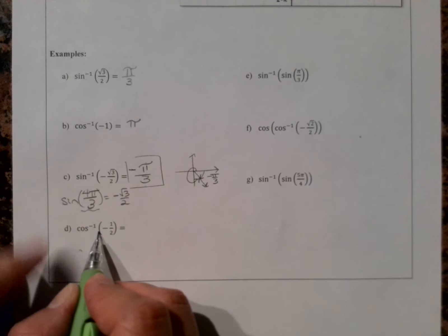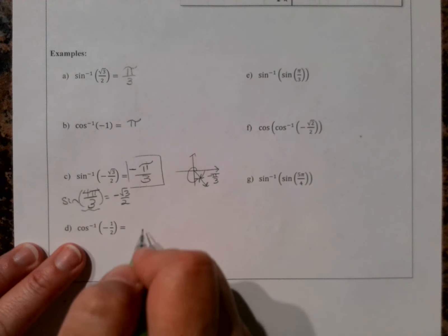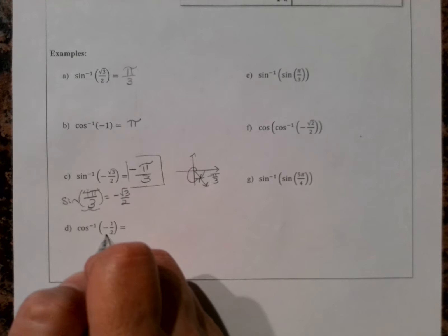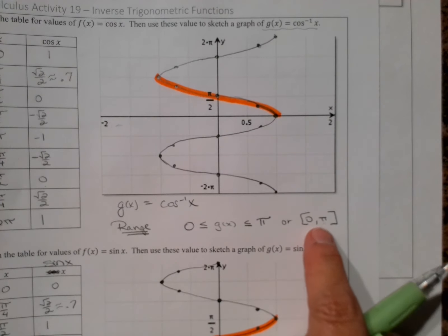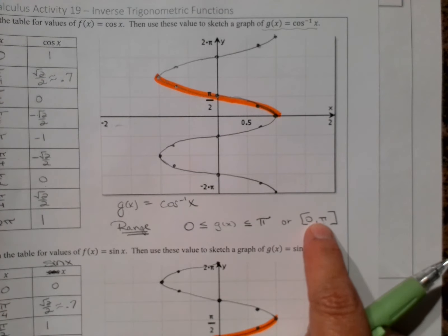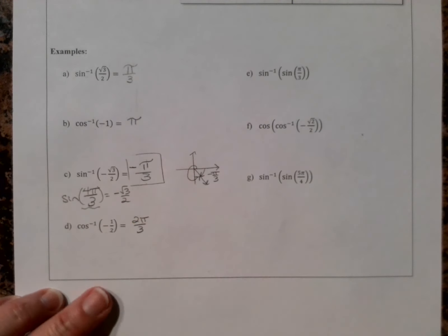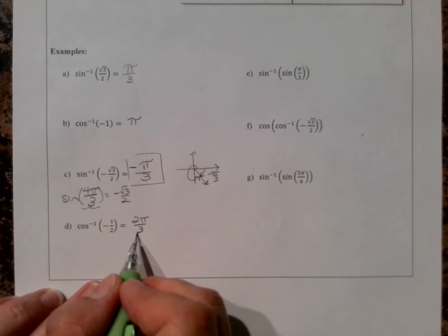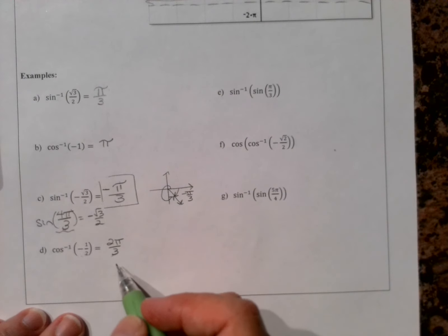For arccos(-1/2): going around the unit circle, that happens at 2π/3. Thinking about the range for inverse cosine, 2π/3 is between 0 and π, so it's in range — we don't need to find another coterminal angle. So arccos(-1/2) = 2π/3. Just be careful: your outputs have to be within the range for the function.